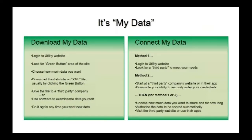As part of the White House's My Data initiative, Download My Data and Connect My Data are the two ways to receive energy and water usage information. For Download My Data, you simply log into your utility website, find the Green Button area, choose how much data you want, and download it as an XML file formatted to the Green Button standard. You can then give that file to a third-party company or use software to examine it yourself, doing this each time you want new data — monthly or even annually.